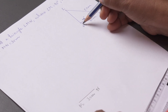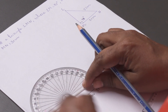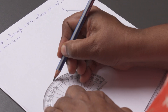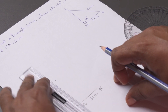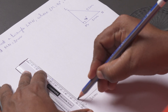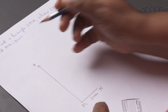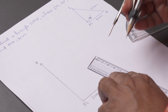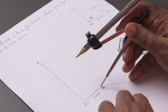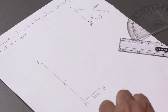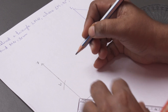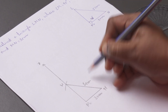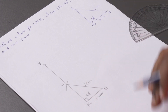Next, we need to draw an angle of 90 degrees at M. Take a protractor, place it at M, and draw XM perpendicular to MN. Now, take a pair of compasses of radius 5 cm, place it at N, and draw an arc to cut XM at point L. With the help of a ruler, join LN. LMN is the required triangle.